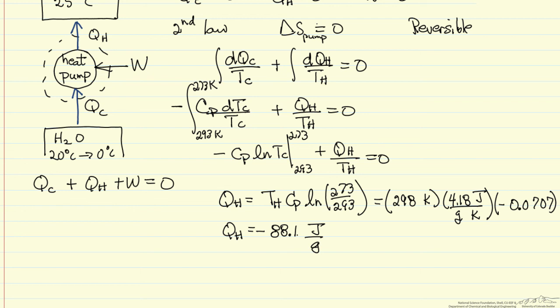And this then allows us to calculate the overall QC, which is minus Cp times delta T. Cp delta T is the change in the energy of the water. We have the opposite sign for the energy being transferred to the heat pump.